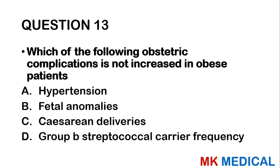Question 46: Drugs used for ovulation induction — EXCEPT: A — gonadotrophin-releasing hormones. B — clomiphene citrate. C — gonadotrophins. D — letrozole. E — danazol. Danazol is used to manage endometriosis and does not cause ovulation — it actually causes atrophy of the endometrium. It is the only drug here that cannot be used as an ovulation induction agent. The answer is E.